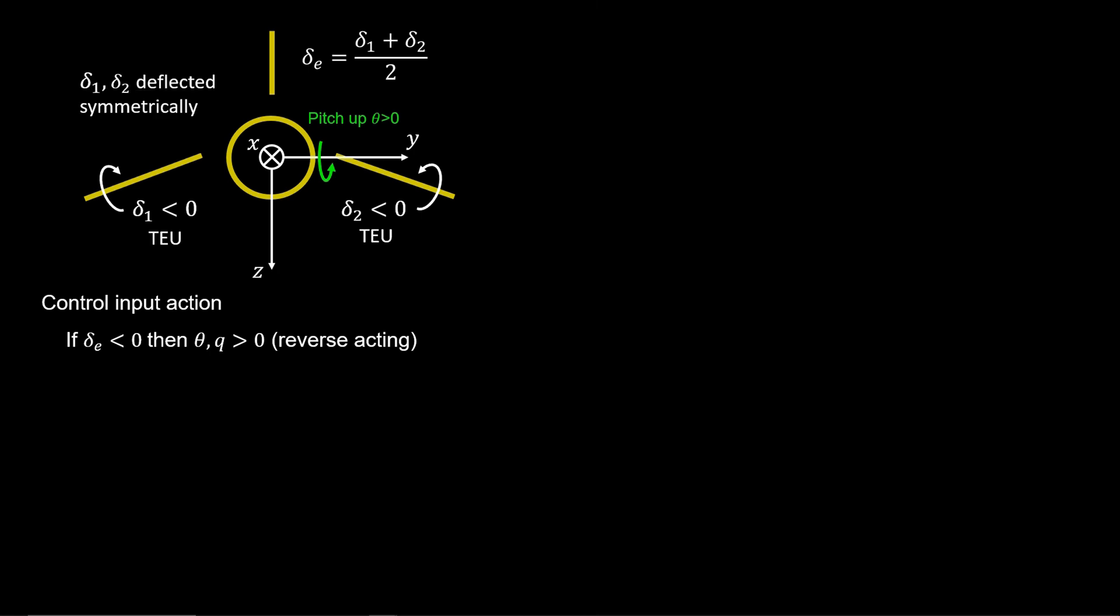Pitch stability augmentation opposes pitch through elevator action. Therefore, if an IMU feeds back positive pitch rate—that is, the aircraft is pitching up—the elevator must move in the positive direction, that is, trailing edge down, to oppose the pitch action.